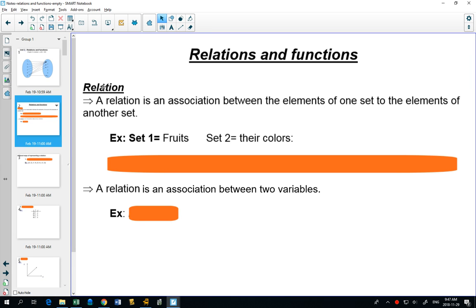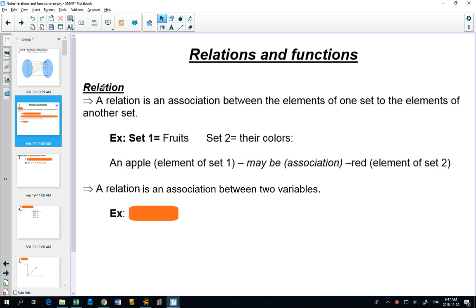Are there red bananas? I think there might be. And if you leave them long enough, black bananas. An apple, an element of the first set, could be associated with the color red in the second set. And that makes a relationship.